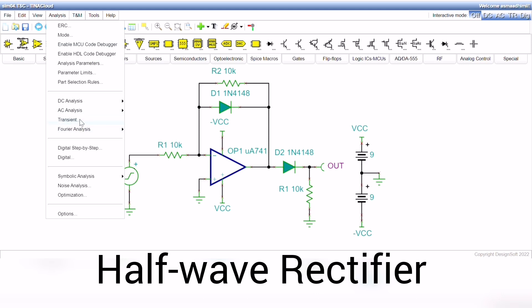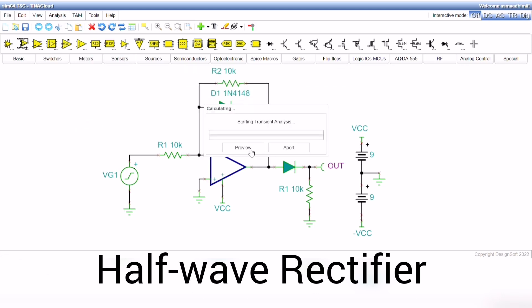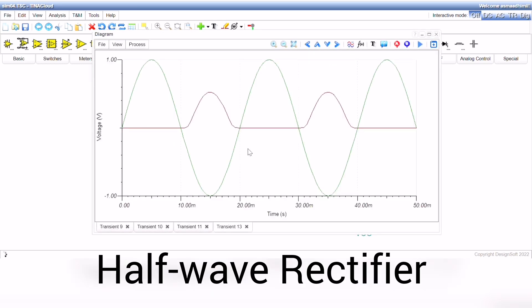Run the simulation by clicking on Analyzes, and then on Transient. Separate the outputs, and you should see the applied voltages and the output voltage, as shown here.